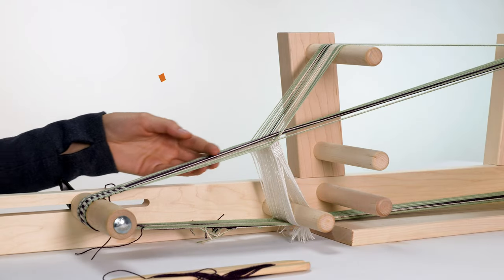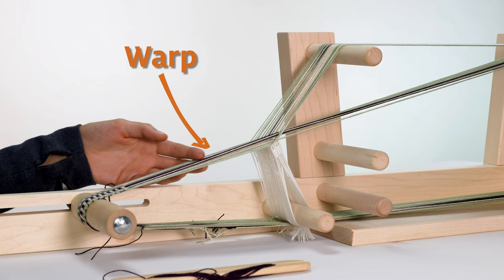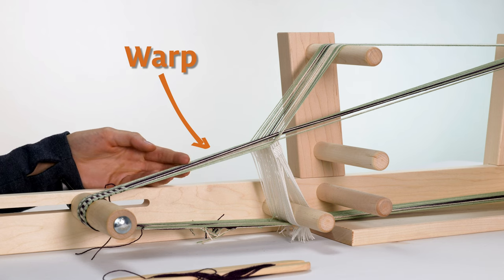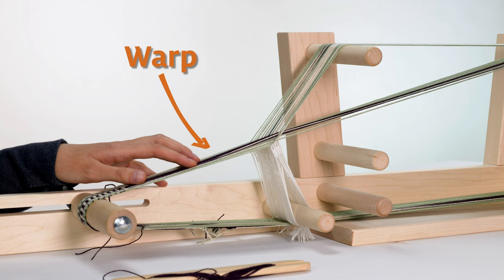The threads that are held under tension on the loom are called the warp. Warp is also a verb that we use to talk about the process of placing the warp threads onto a loom.